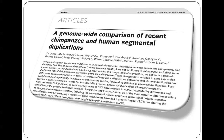Back to back with the chimp genome paper, there was a paper that looked at recent chimpanzee and human segmental duplications. A key finding: base per base, large segmental duplication events have had a greater impact — 2.7% — in altering the genomic landscape of these two species than single base pair substitutions, which amounts to 1.2%. So when people ask how similar the human and chimp genome are, it depends on what metric you're looking at.